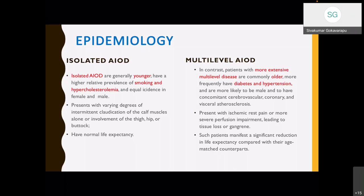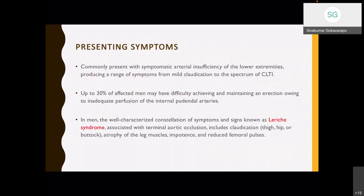In isolated disease, patients have normal life expectancy. In multilevel occlusive disease, they present with more severe disease like critical limb-threatening ischemia, rest pain, and gangrene. These patients have reduced life expectancy due to comorbidities like coronary artery disease or cerebrovascular disease. They may present with critical limb ischemia or claudication. Up to 30% of affected males may present with erectile dysfunction due to involvement of the internal pudendal arteries.